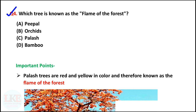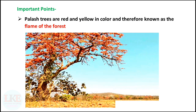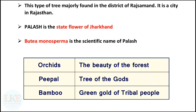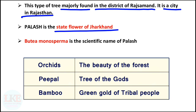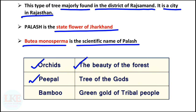Question number 4: which tree is known as the flame of the forest? A. Peepal, B. Orchids, C. Palash, D. Bamboo. Right answer option C: Palash. Palash trees are red and yellow in colour and therefore known as the flame of the forest. This type of tree is majorly found in Rajsamand district in Rajasthan. Palash is the state flower of Jharkhand. Butea monosperma is the scientific name of Palash. For your information, Orchids is known as the beauty of the forest, Peepal is called the tree of the gods, and Bamboo is known as the green gold of tribal people.